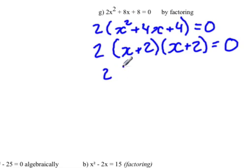We can rewrite this as 2 times x plus 2 squared equals 0. But we can leave it unfactored if you want.